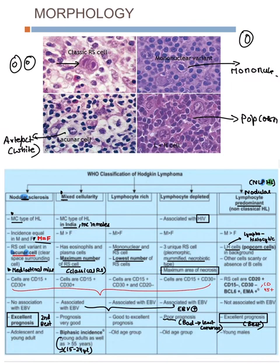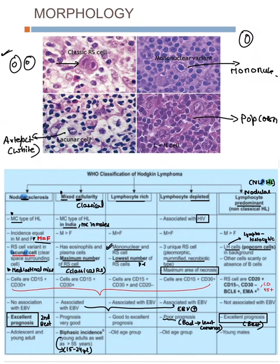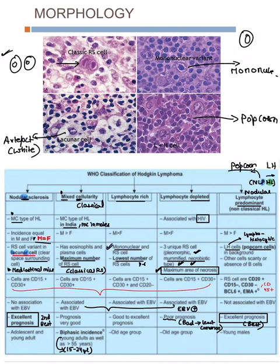Mixed cellularity is most common in India and more common in males. It has the classical Reed-Sternberg cell — remember: mixed cellularity has the classical Reed-Sternberg cell. Lymphocyte rich: these are mononuclear — rich people usually travel alone, so there are very few Reed-Sternberg cells. For NLPHL, P means popcorn. The full name of LNH cells is lymphohistiocytic cells.